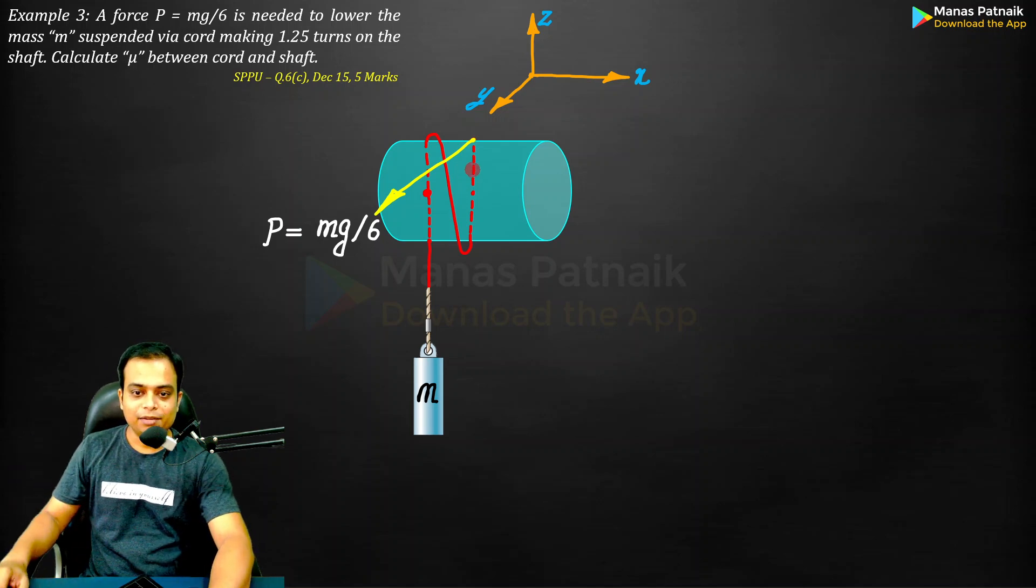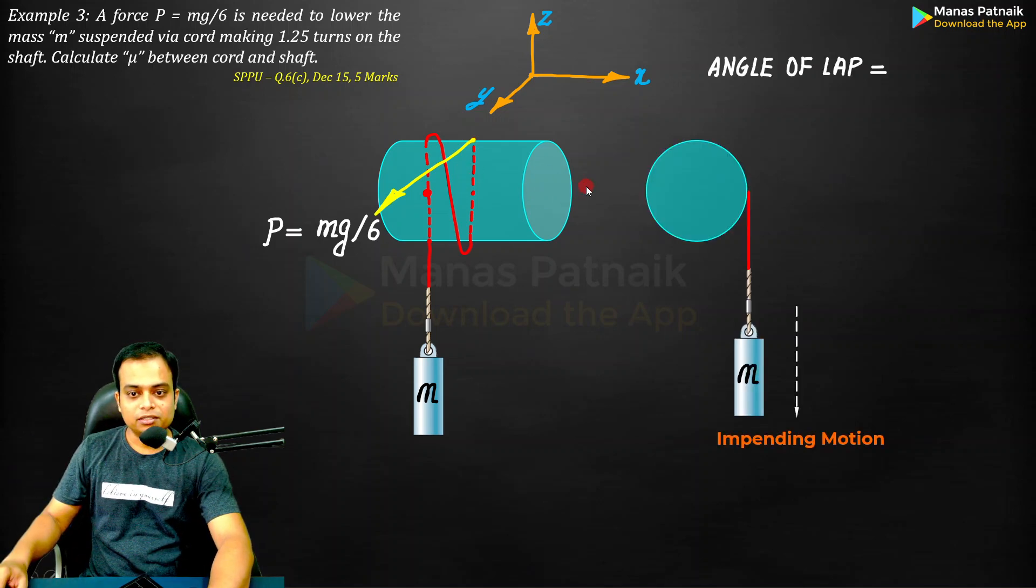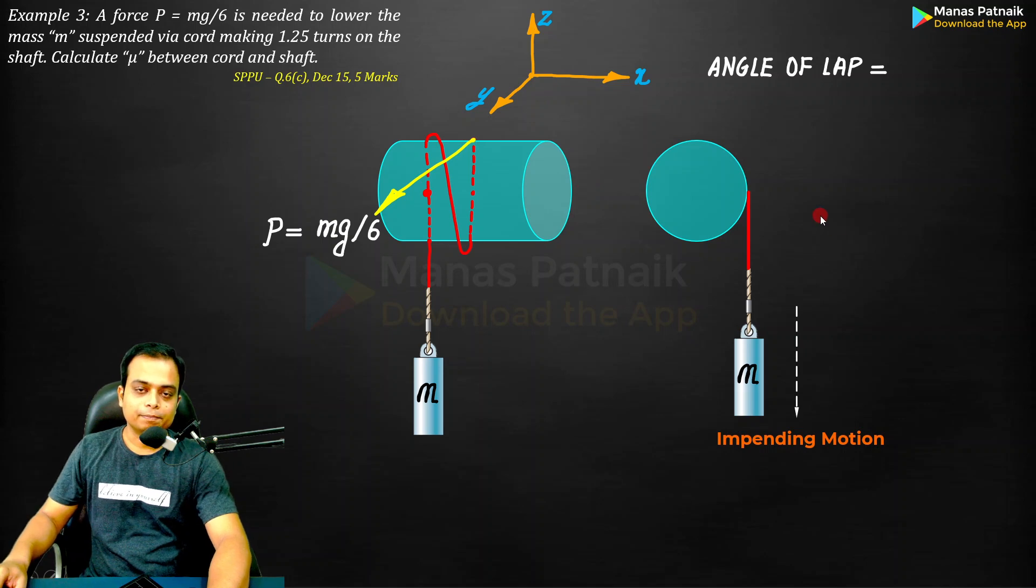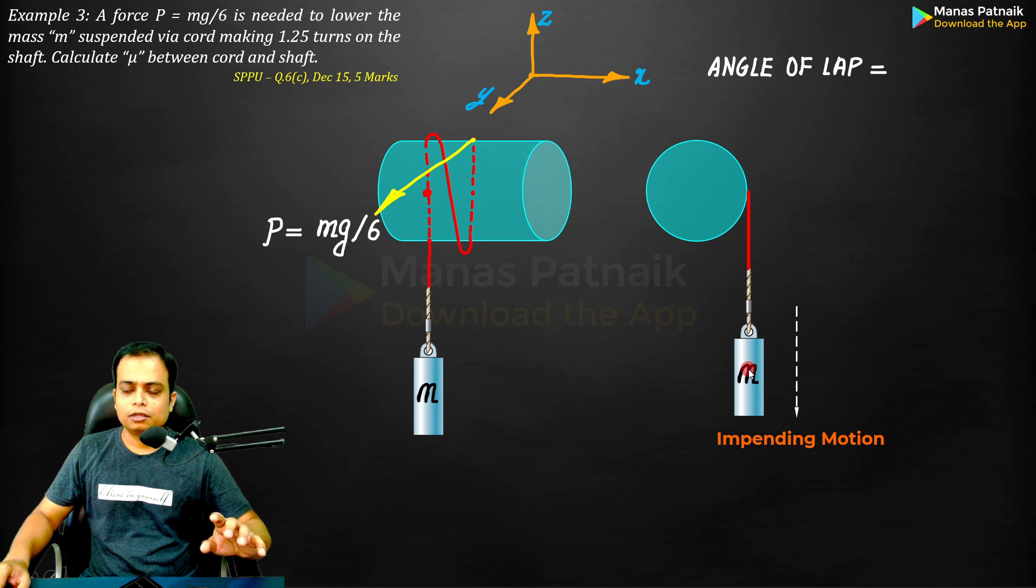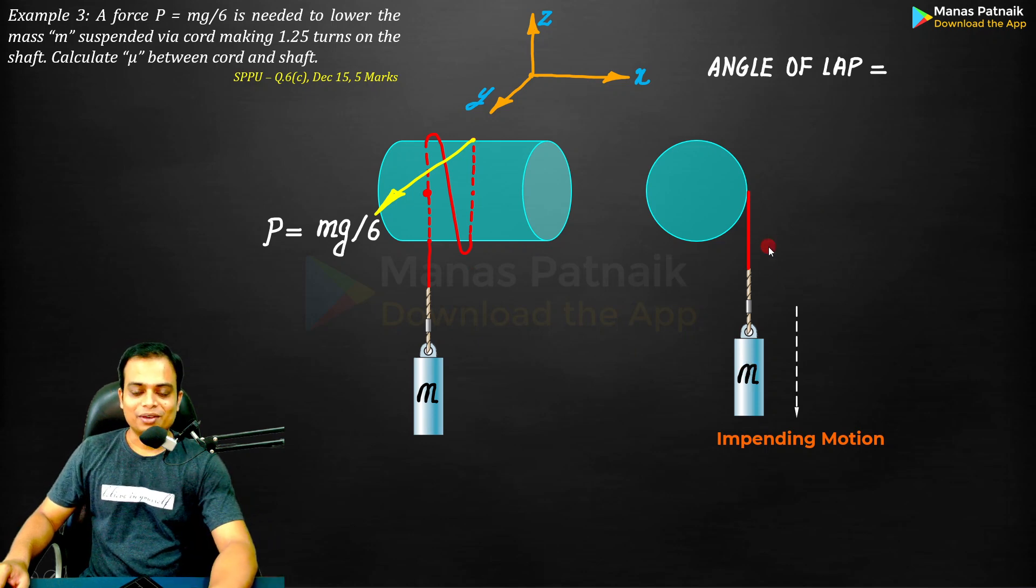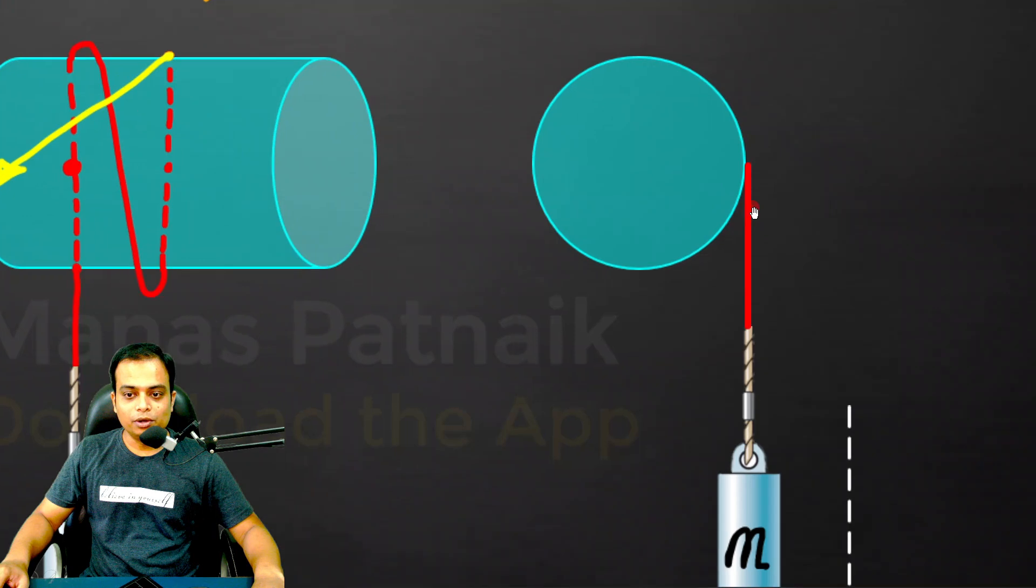To give you a better picture of how the cord has been wound around the shaft, let me take a look at this shaft from this side. This is how the mass has been suspended.